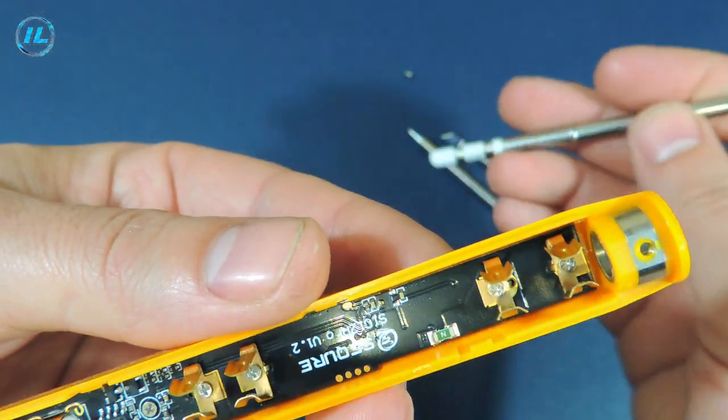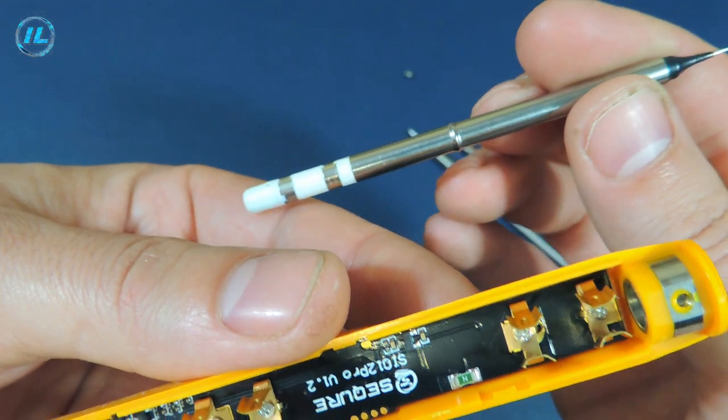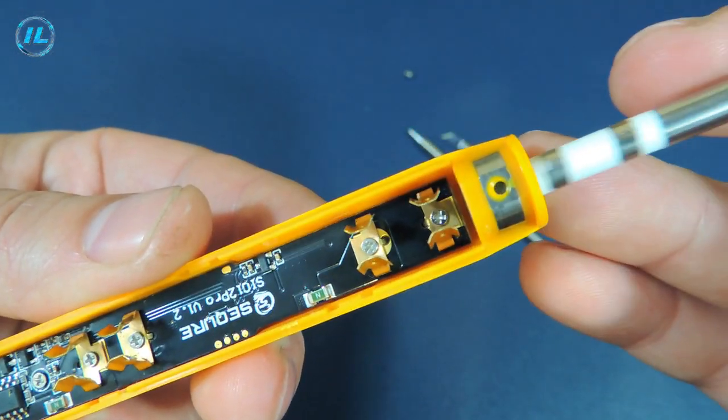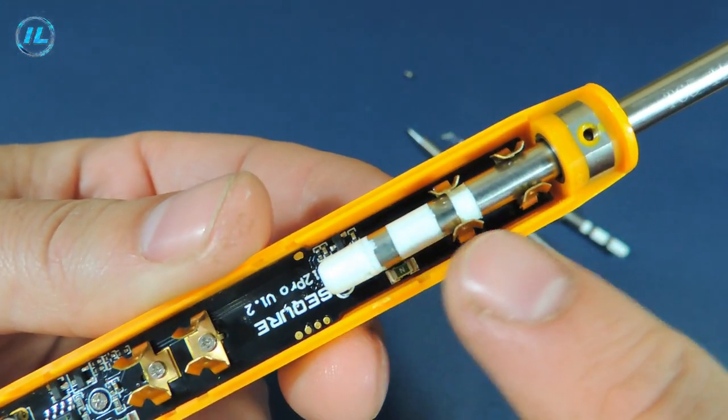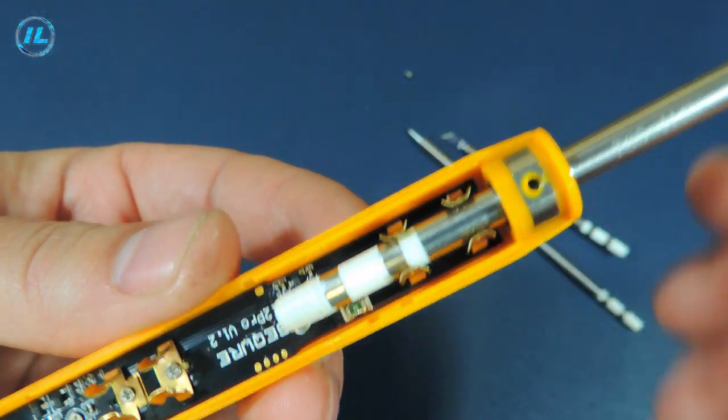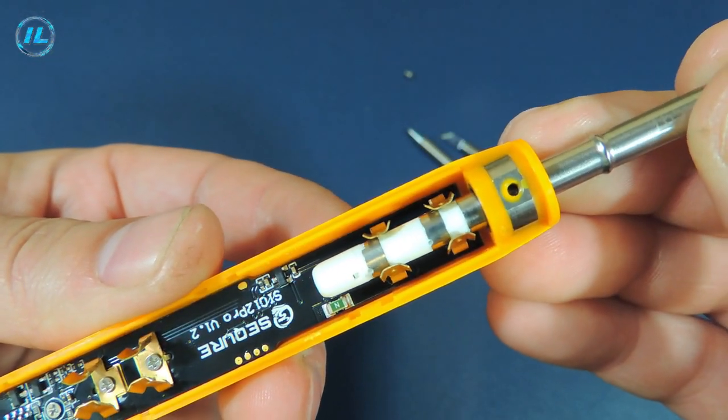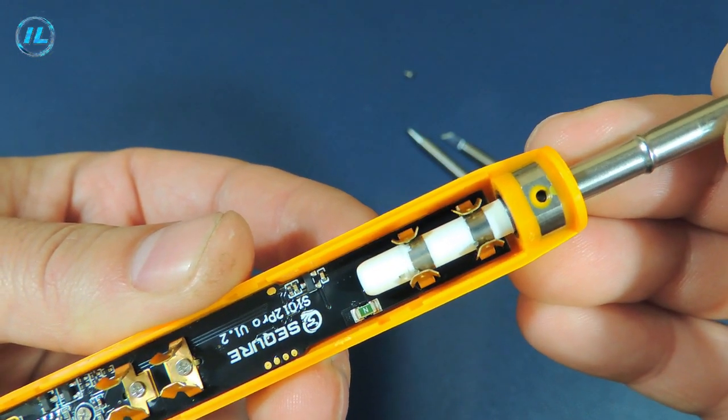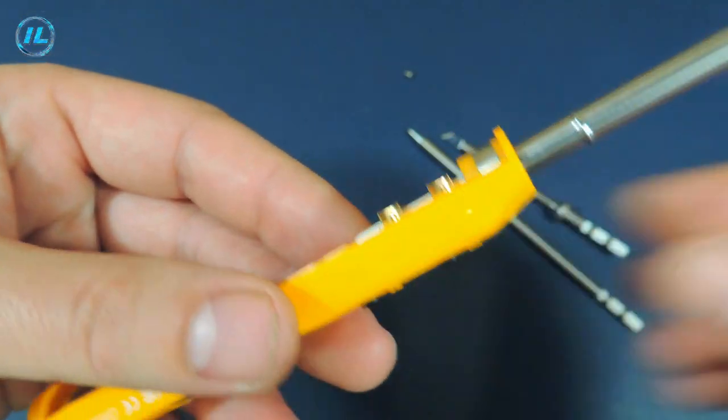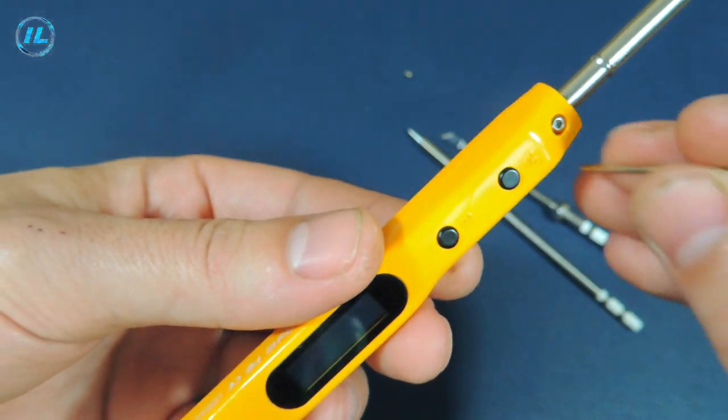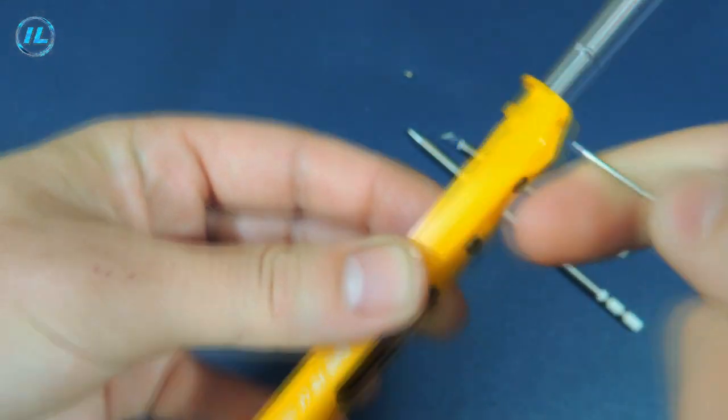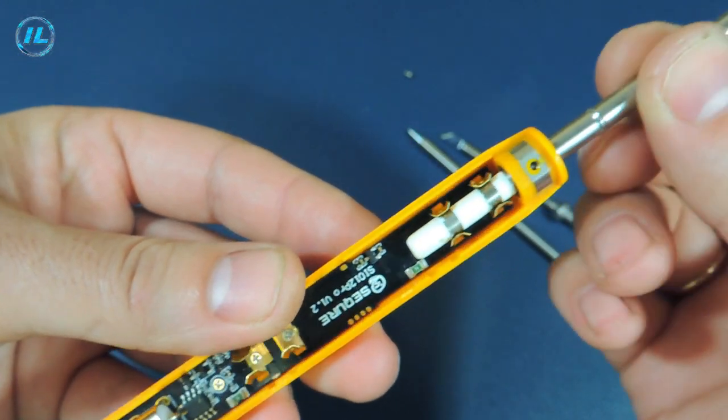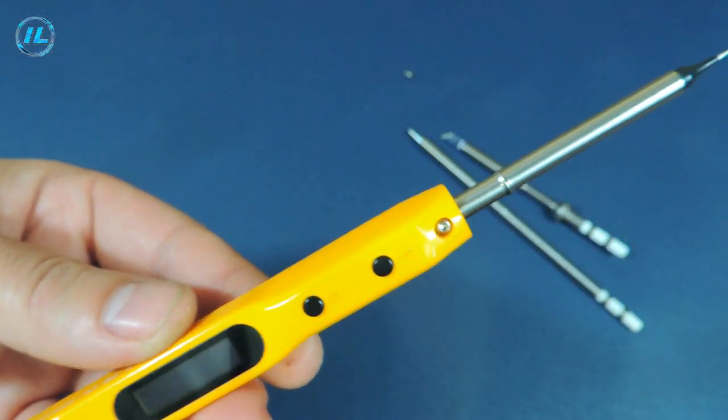But if you use a tip that is designed for soldering irons of the company, for example, GVDA or FNERSI, then when installing it, the contacts do not match. In this case, you need to visually align the contacts and then fix the tip with a key. The tip is fixed, and the soldering iron can be used.